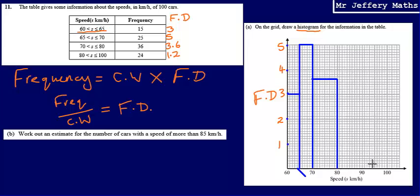And then the last one, it's got a class width of 20. So 80 to 100, and that goes up to a height of 1.2. So again, just need to be a bit careful. That's one there, 1.1, 1.2, I think. Okay, so my histogram should look like that.